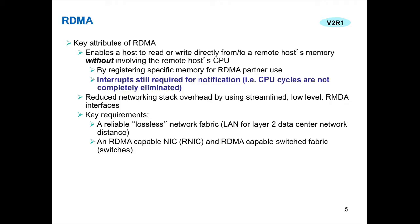RDMA in general — not necessarily our implementation — enables a host to read or write directly into or from a remote partner's memory without involving the host CPU. It's a silent write or read. The memory is registered (the RMBE element) for the partner to use. You still require an interrupt — if I write into the partner's buffer, I still have to notify them that data is there. So there are some CPU cycles for that. However, the overall networking stack overhead is greatly streamlined using the RDMA interfaces. Key requirements: it needs a lossless network fabric at layer two, an RDMA-capable RNIC or RoCE Express adapter, and an RDMA-capable switch, which is just a standard 10 GigE Ethernet switch.